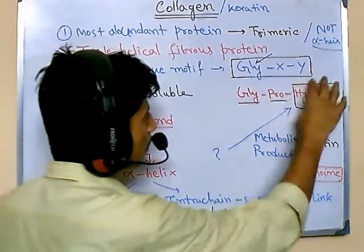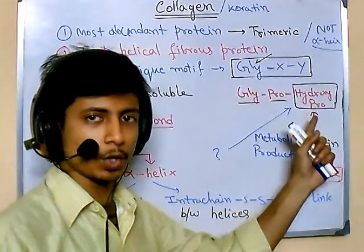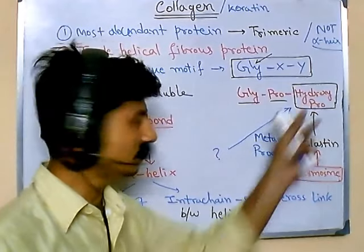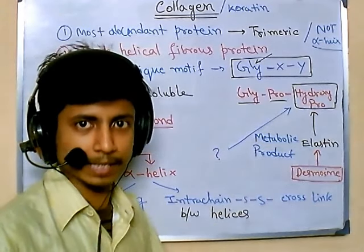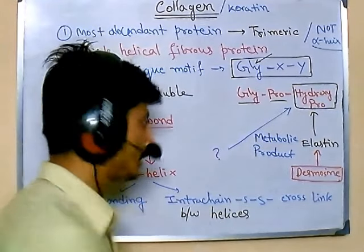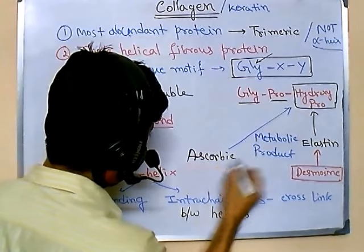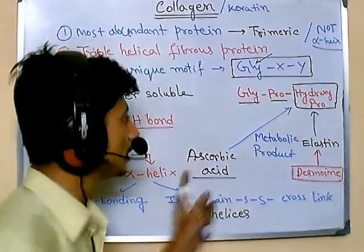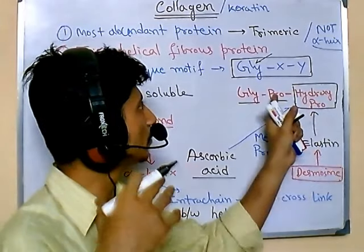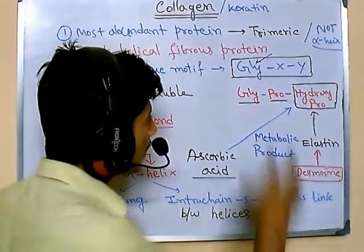Now, where does hydroxyproline come from? Hydroxyproline is not one of the standard amino acids we typically know. It is a non-essential amino acid made inside the body through a metabolic pathway. The precursor is ascorbic acid — from ascorbic acid, through a metabolic pathway, the body produces hydroxyproline, which plays a very important role in the Glycine-Proline-Hydroxyproline motif of collagen.